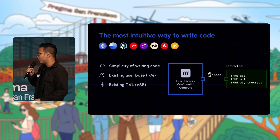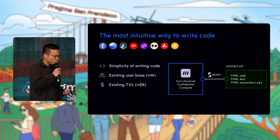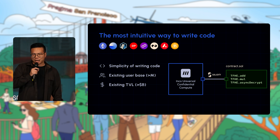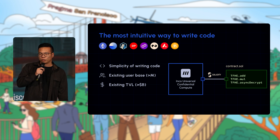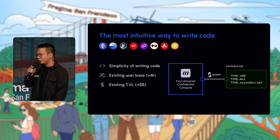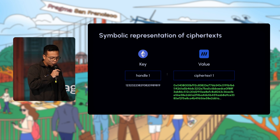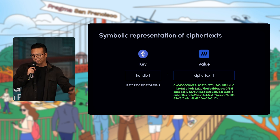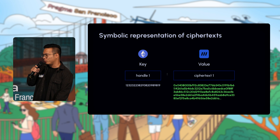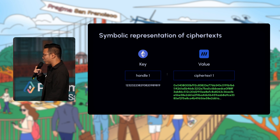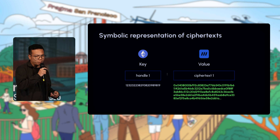When we launch mainnet, folks will be able to write FHE code directly on top of Ethereum and existing L1s and L2s, tapping into the existing user base and TVL without moving to a new chain. For example, you could deploy a poker game on Arbitrum or build a payroll system on Ethereum. From a high level, what you store on Ethereum is really just a handle — think of it like a key in a key-value pair, such as the hash of the ciphertext — not the ciphertext itself.